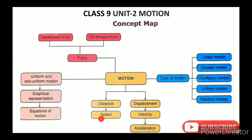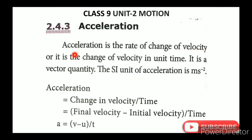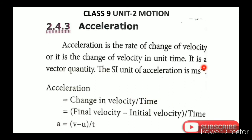Now we consider acceleration. Acceleration is the rate of change of velocity, or the change of velocity per unit time: acceleration equals velocity divided by time. Velocity is a vector quantity, so acceleration is also a vector quantity. The unit of acceleration is meter per second squared, or m·s⁻². Since velocity is displacement by time, acceleration is displacement by time squared — hence m·s⁻².